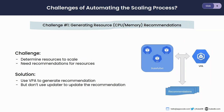Now let's jump into the challenges of auto-scaling. The first challenge is to determine the resources to scale. If the database is consistently using lower resources than the requested amount, we should scale down. If it is consistently using a higher amount, we should scale up. For example, if our database pods have one core of CPU request but are continuously using 500 millicore, we should scale down the request to 500 millicore. We need a resource recommendation that we can act on to vertically scale our database.